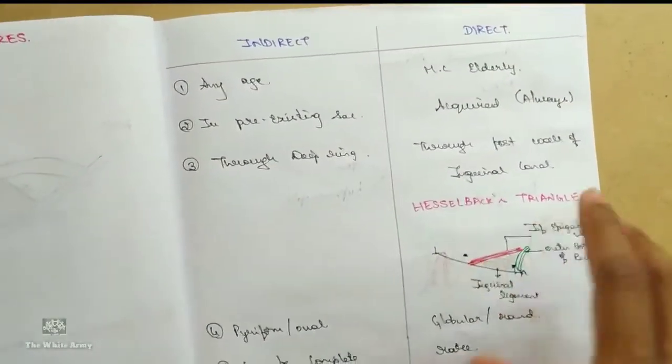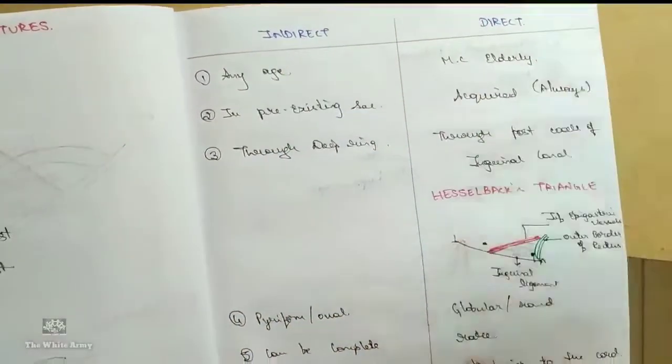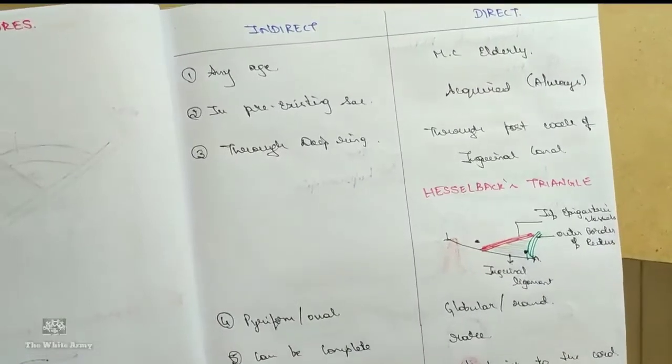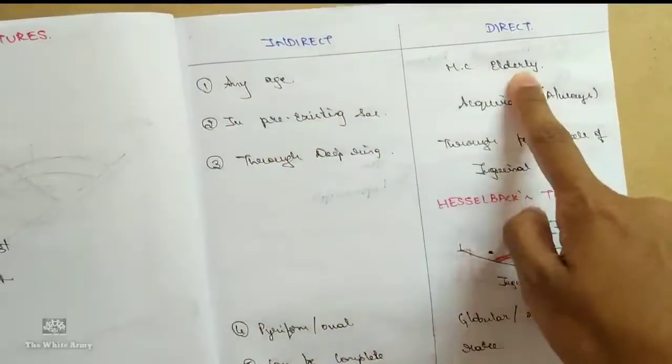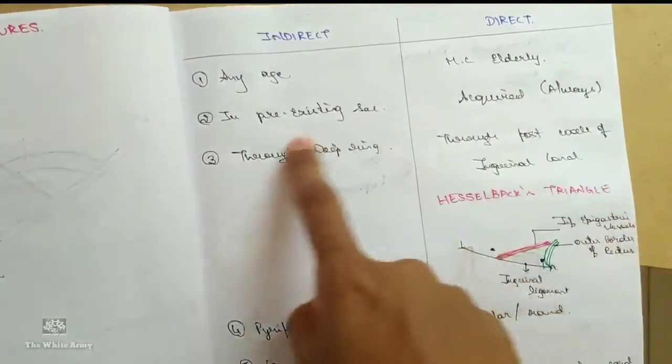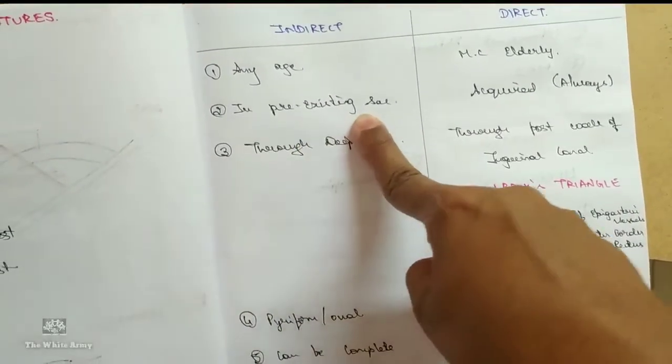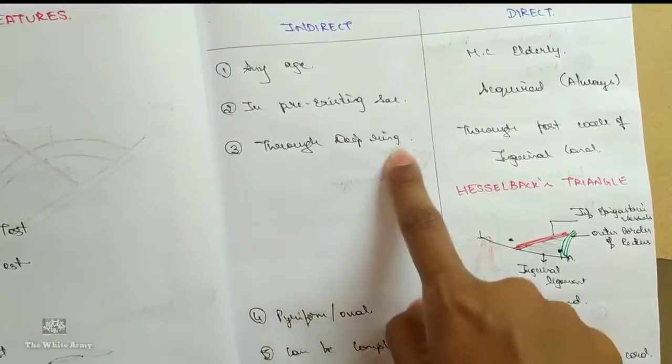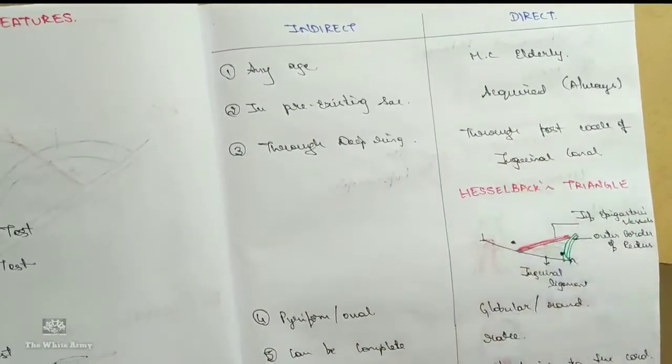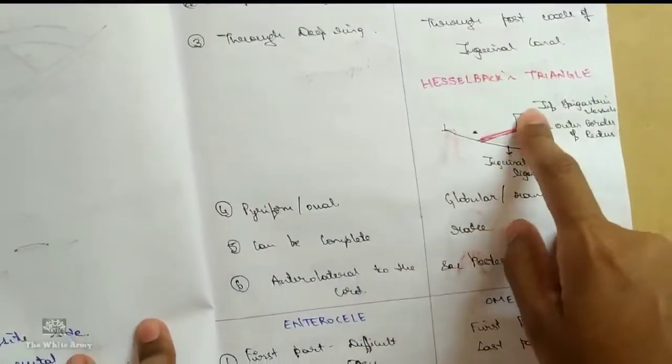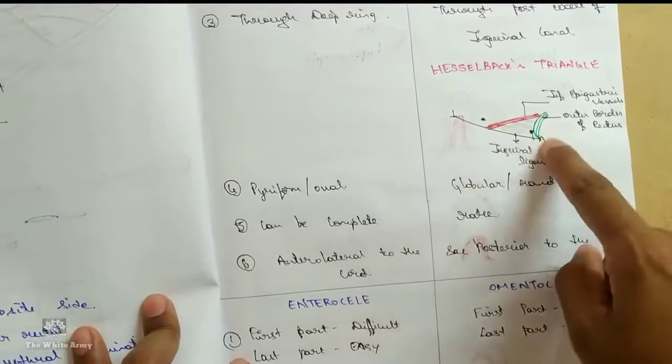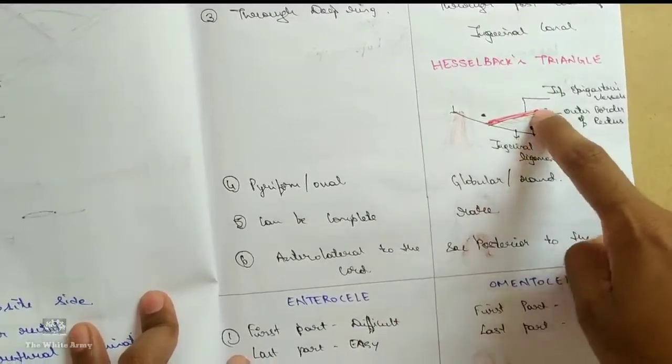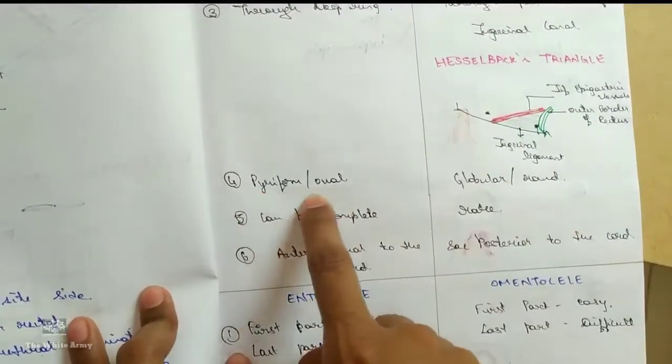Important differences between indirect and direct inguinal hernia. Indirect hernia can occur in any age whereas direct occurs most commonly in elderly. It needs a pre-existing sac inguinal canal. It is always acquired. It is through the deep ring. It is to the posterior wall of inguinal canal, that is the Hesselbach triangle which is bounded by inguinal ligament, outer border of rectus, inferior epigastric vessels.